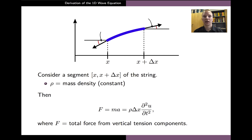We begin by considering a small segment of the string as shown in the figure on the slide, and we want to apply Newton's second law, which states that the mass times the vertical acceleration of the piece of the string is equal to the sum of the vertical forces acting on it. For a small enough segment, the acceleration in the vertical direction is roughly equal to the second partial derivative of the displacement u with respect to time t. If we denote the mass density of the string by rho, then the mass of the piece of the string is simply rho times delta x. Here f is the total vertical force acting on the segment, and this force arises from the difference in the vertical components of the tensions at x and at x plus delta x.